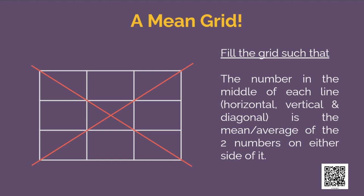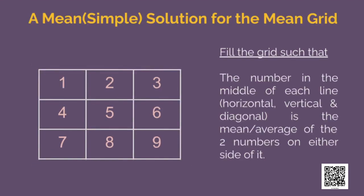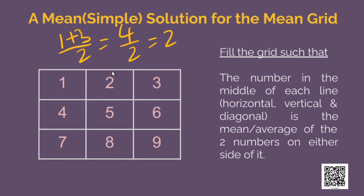I will show you one of the many possible solutions which is very simple. Here the middle number should be the average of the two numbers on its sides. So, 1 plus 3 divided by 2 will be 4 divided by 2, which is 2. So, this is correct.